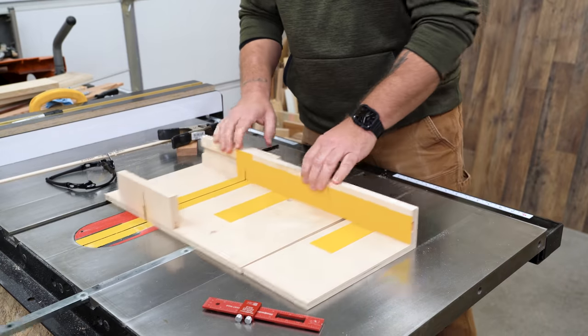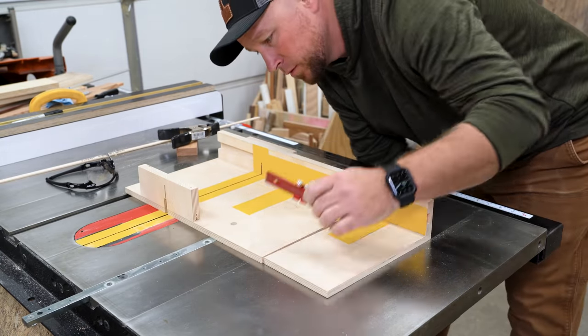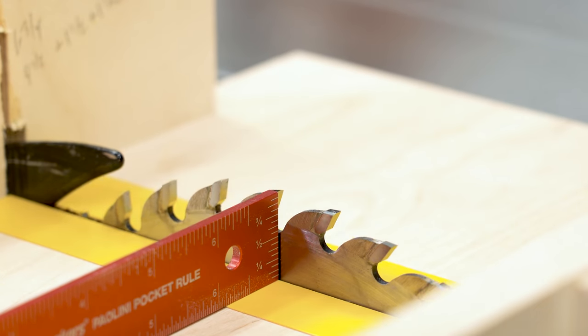So we're going to bust out the old beater crosscut sled, which works pretty great since we outfitted it with the zero clearance tape, and I'm going to set it up to make dados to accept a scrap of 12 mil birch plywood.